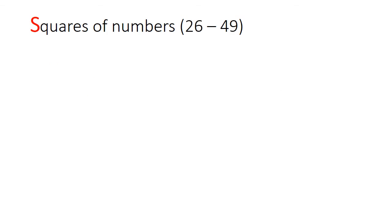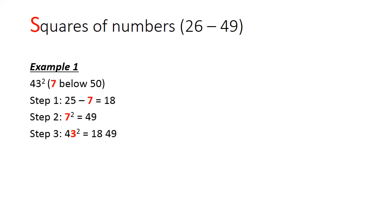For numbers between 26 and 49, let me go through just one example, and you can pause the video to look at the second example as well as the proof on your own. Let's look at 43 squared. This number is 7 below 50. So 7 is the key number, but instead of adding 7 to 25, we subtract 7 from 25 to get 18. We square 7 to get 49, and we put the two parts together to get 1849.